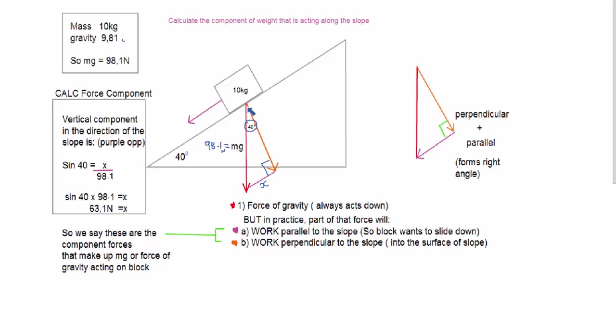So here we have a triangle and we can now apply trigonometry to it. We're interested in the side that's opposite and we have the hypotenuse. So sin 40 is equal to opposite which is x over the hypotenuse which is 98.1. Rearrange that. Bring the 98.1 to the other side so you've got sin 40 multiplied by 98.1 is equal to x. Calculate that. x is equal to 63.1 Newtons.